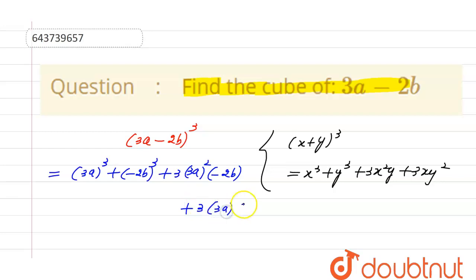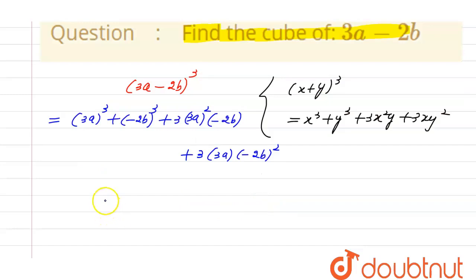Minus 2 × 2 × 2 will be -8b³. 8b³ minus 3 × 9 = 27, 27 × 2 = 54a²b. And here we will get 9 × 4 = 36ab².